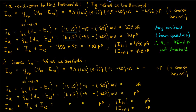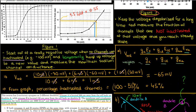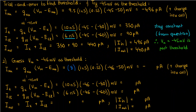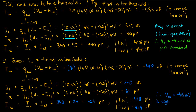At minus 46 millivolts, the procedure is the same except VM is replaced by minus 46 mV and the sodium conductance fold-increase becomes 8 from figure 1. After substitution, the sodium current becomes negative 418 picoamps, while potassium and chloride currents become 340 and 84 picoamps respectively. The total outward current is 424 picoamps and the inward current magnitude is 418 picoamps, so now the inward current is slightly below the outward current, meaning we're just below threshold.